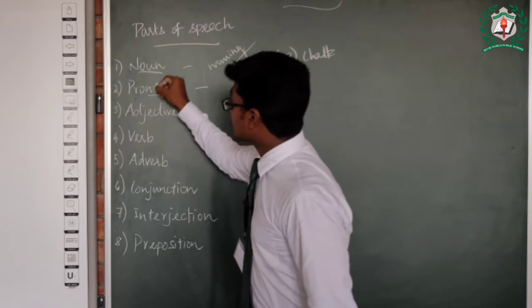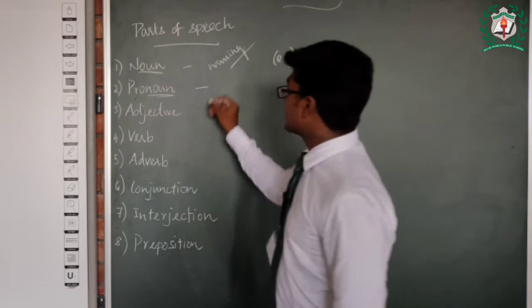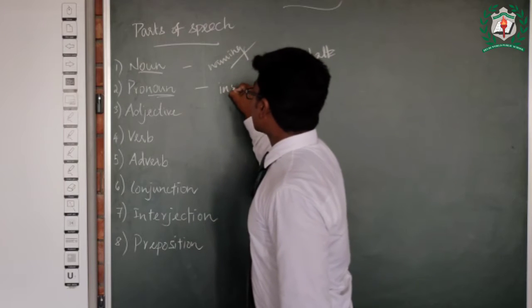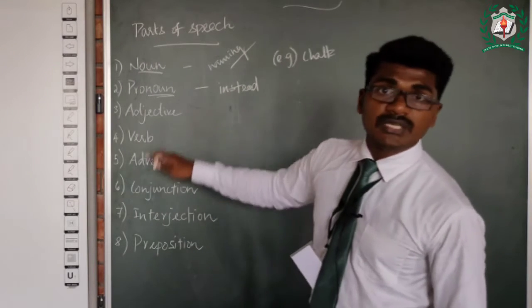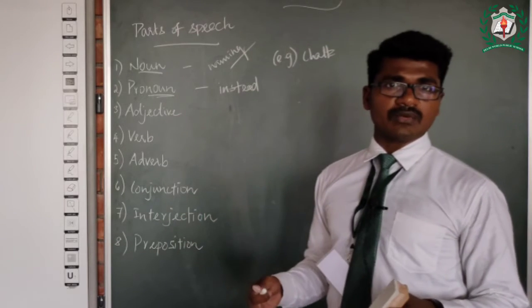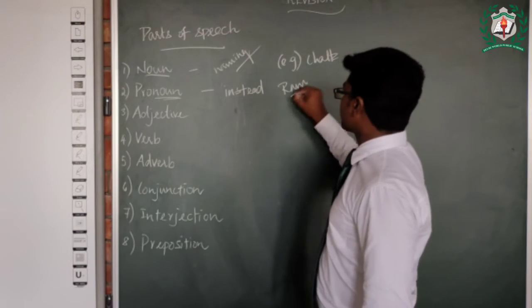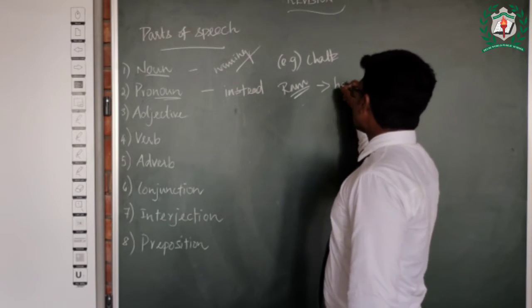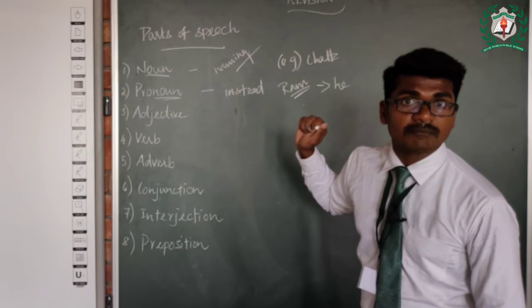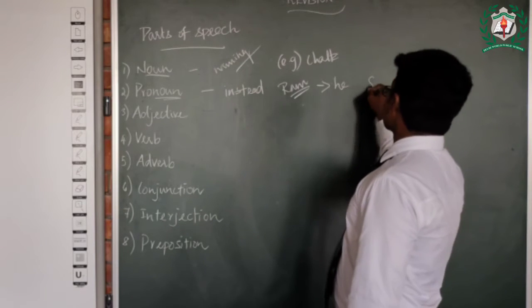Second, pronoun. When you see pronoun spelling itself, you can see noun is here. So here, instead of noun, we use pronoun. How can we use instead of noun? If Ram is given, so you can use 'he' instead of Ram. Suppose Sita is given, instead of Sita you can use 'she'.